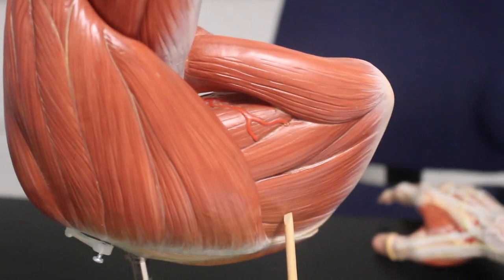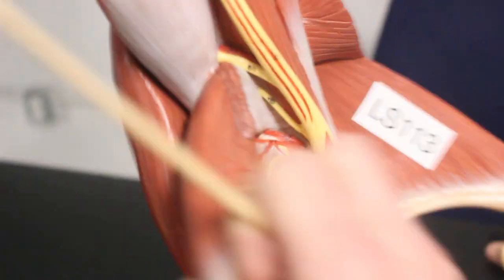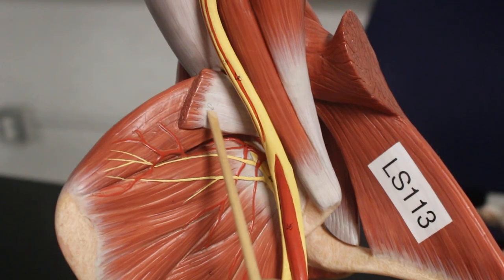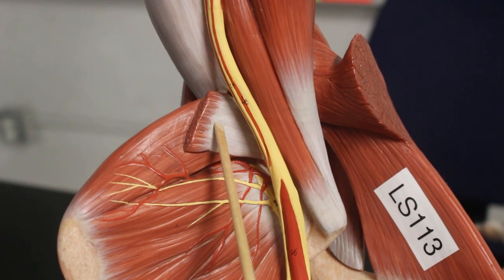Supraspinatus was under there, infraspinatus is right here, teres minor, teres major. Flip it around, this is subscapularis underneath the scapula, that's the chunk cutoff bit of latissimus dorsi, that back muscle that inserts into the humerus.